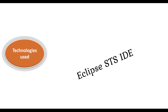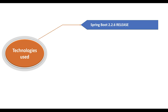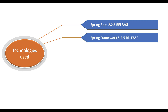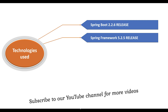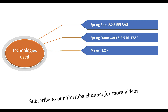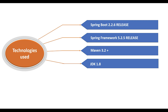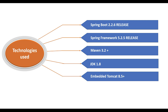Let's have a look at the tools and technologies we are going to use. I am going to use Eclipse STS IDE, but you can also use IntelliJ. We are going to use Spring Boot 2.6 release, which is the latest release as of now. Spring Boot 2+ internally uses Spring Framework 5+. We are going to use Maven 3.2 and JDK 1.8 — however you can use JDK 9, 10, or 11 as per your requirement, but make sure you use JDK 1.8 or later. We will also use embedded Tomcat server 8.5+.